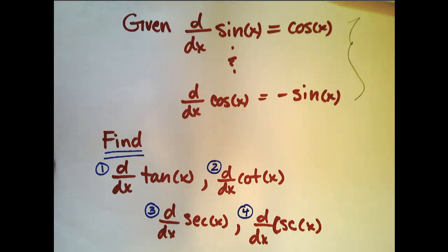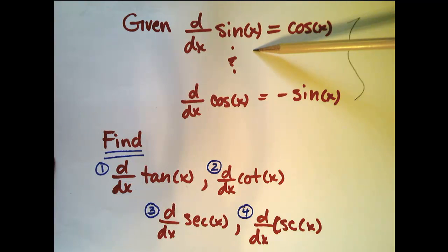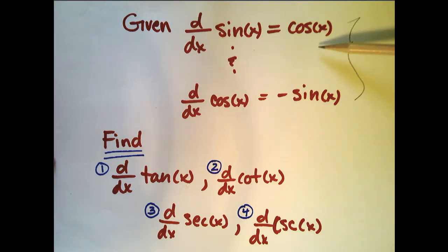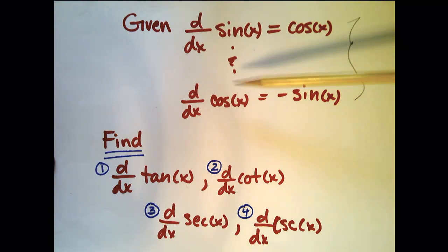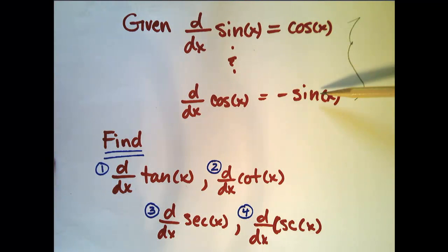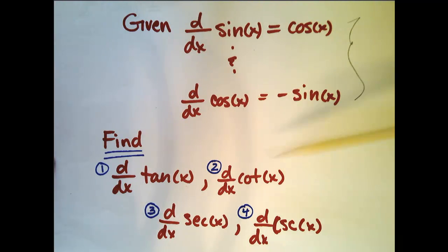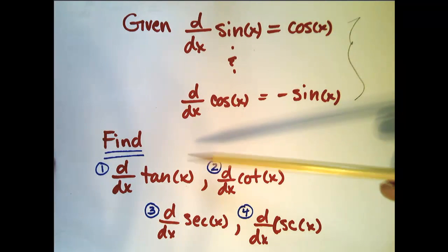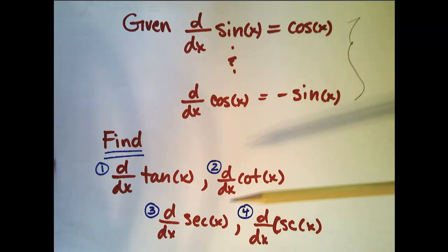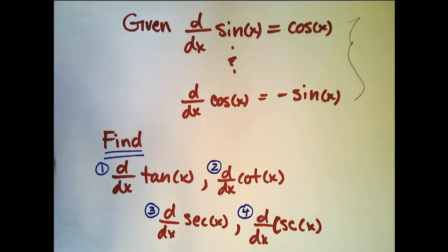In a previous video we saw how the derivative of sine was cosine and the derivative of cosine is negative sine. In this video we're going to use those two facts to find the derivative of tangent, cotangent, secant, and cosecant.